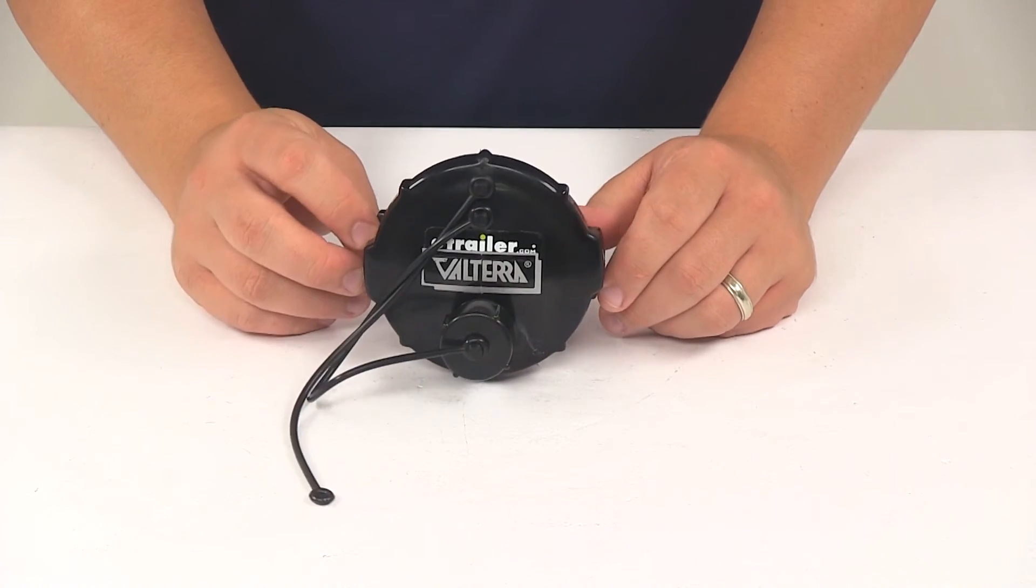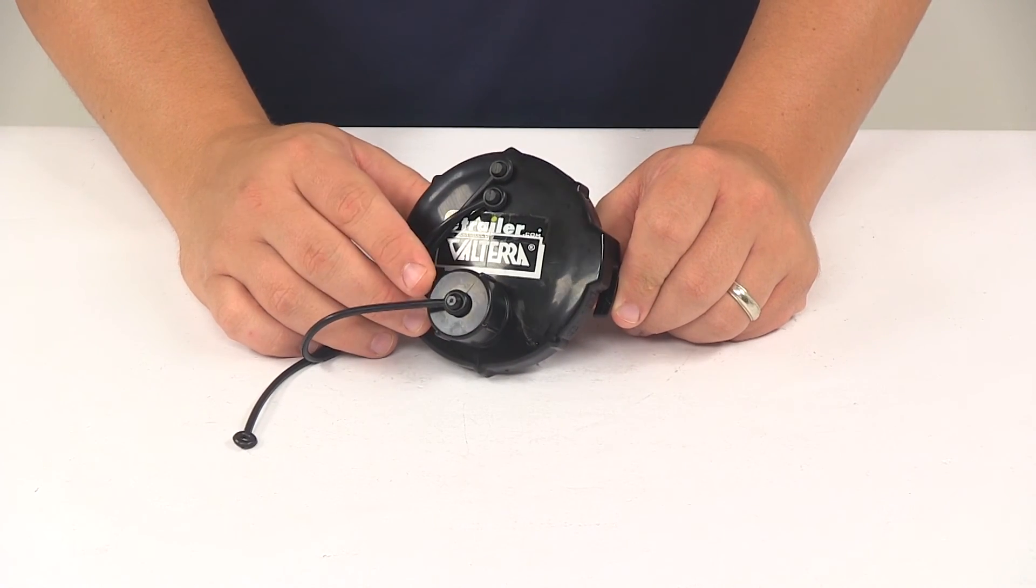That's going to do it for today's look at the Valterra RV waste valve cap with the built-in 3 1/4 inch inlet.